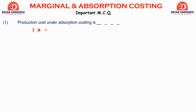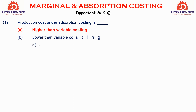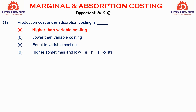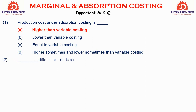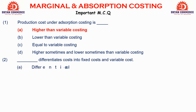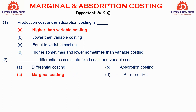MCQ 1: Production cost under Absorption Costing is — Option A: Higher than Variable Costing, B: Lower than Variable Costing, C: Equal to Variable Costing, D: Higher sometimes and Lower sometimes. Answer: A — Higher than Variable Costing, because absorption includes both fixed and variable costs. MCQ 2 asks which method treats variable and fixed costs separately — Answer: B, Absorption Costing.